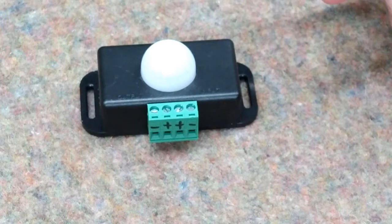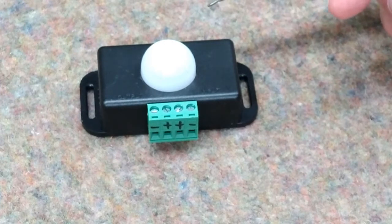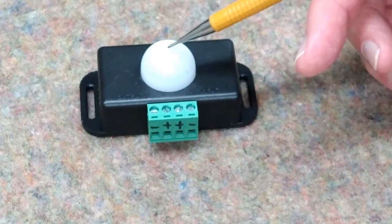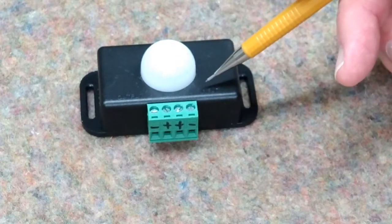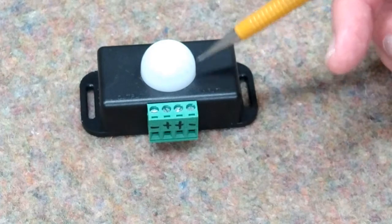This is a 12 to 24 volt infrared PIR motion sensor. Pretty good little unit. I've gotten 15 to 20 foot range on this.